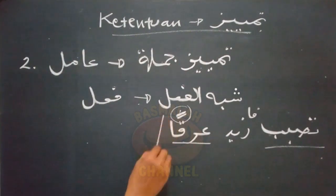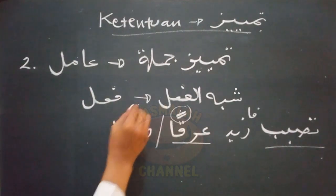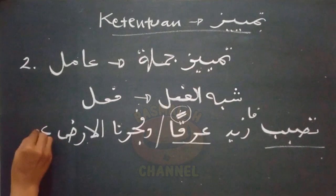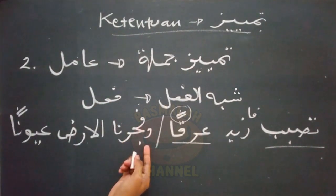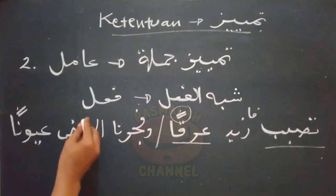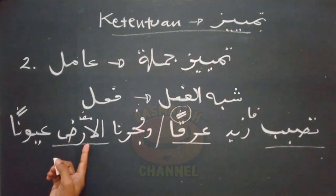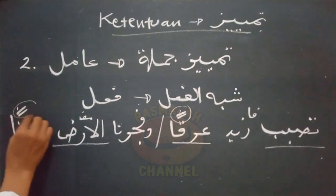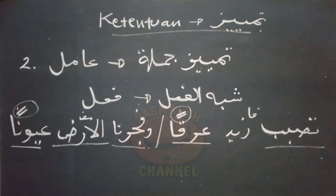Contoh yang lain, seperti lafad 'Wafad Jaruna Al-Ardo Uyunan' — dan telah memancarkan tanah mata airnya. Lafad 'Uyunan' di sini adalah Tamyis, i'rabnya Nasob, dan amilnya adalah kalimat fi'il, yaitu lafad 'Wafad Jaruna'.